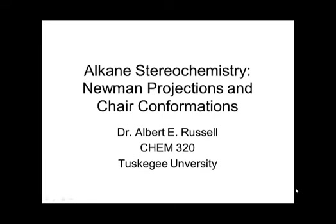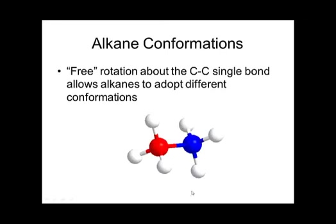This video is going to deal with alkane stereochemistry, and later we'll talk about Newman projections and chair conformations, which will be in a separate video. When we talk about alkanes, we're talking about atoms with no carbon-carbon double bonds — only carbon-carbon single bonds. Ethane is the simplest alkane. The reason alkanes can undergo different conformations is simply because around the carbon-carbon bond you can have rotation.